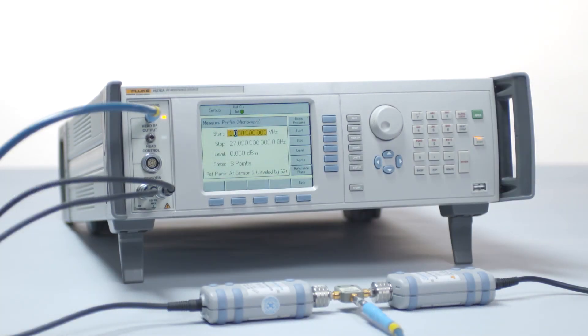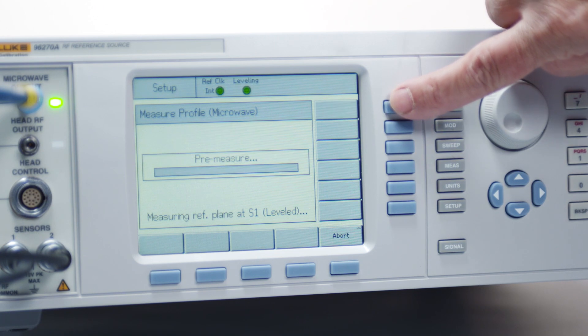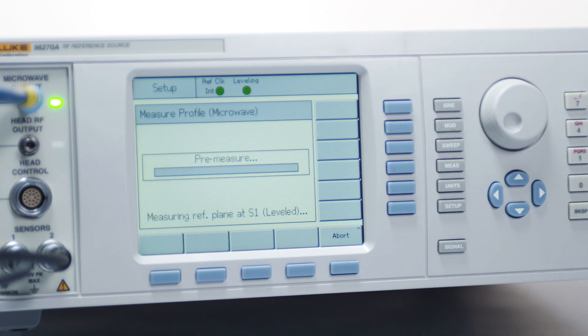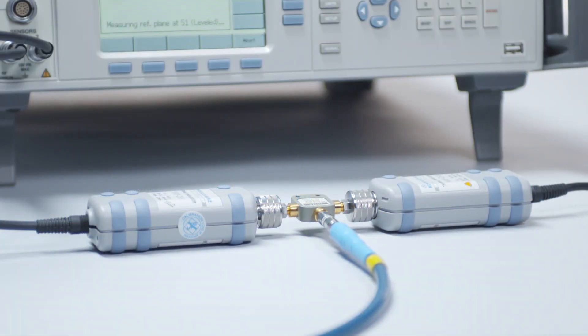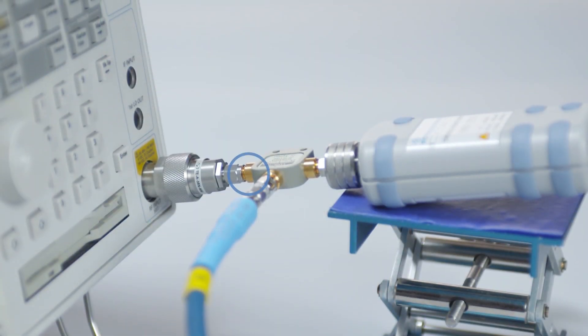The 96270A eliminates this complexity by automatically self-characterizing and adjusting its output level to account for losses and attenuation of system components. This unique capability delivers accurate pure signal levels exactly as set on the 96270A front panel directly to the reference plane of the unit under test. What you set is what you get.